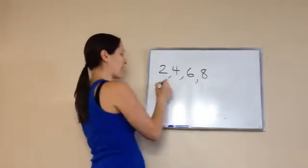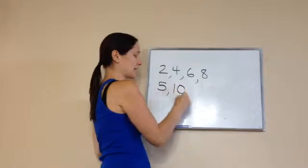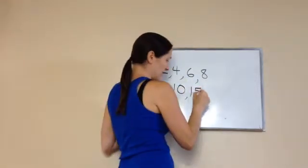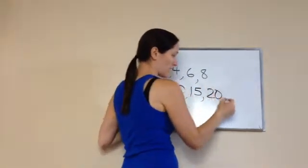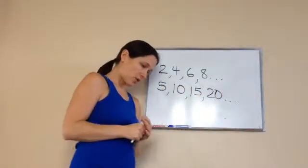Let's do the multiples of 5. 5 times 1 is 5. 5 times 2 is 10. 5 times 3 is 15. 5 times 4 is 20. And so forth. You see how that works?